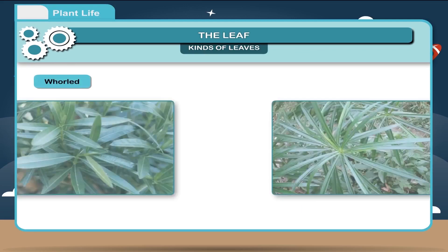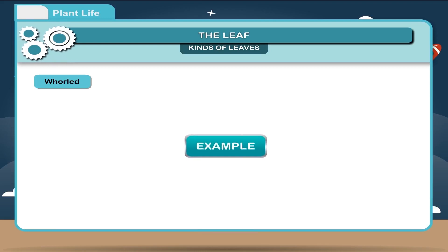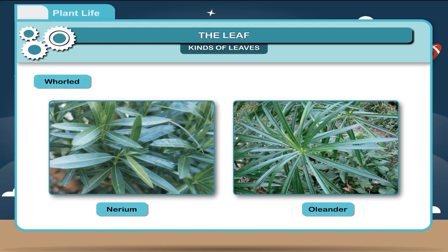Whorl: when more than two leaves develop at each node and are arranged in a circle. Example: nerium, oleander.